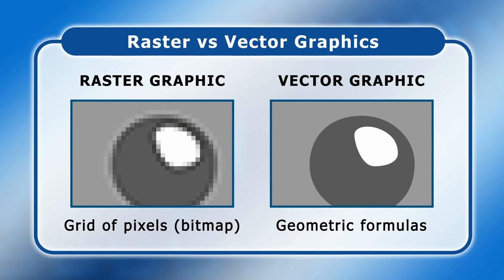Because of this, raster file formats are best suited for storing photographs and other images that are hard to mathematically define. On the other hand, vector formats are more suitable for images that include logos, text and other elements that must always remain sharp even when significantly enlarged.